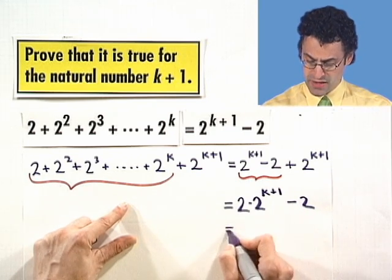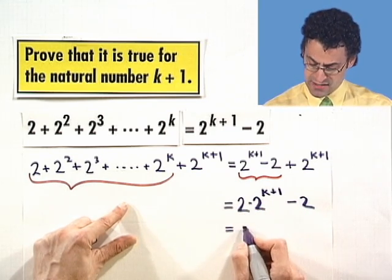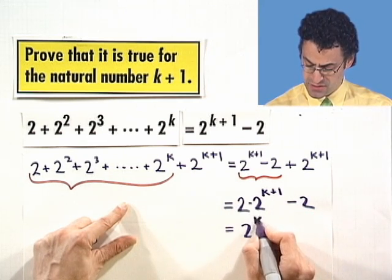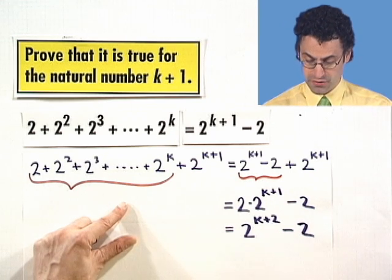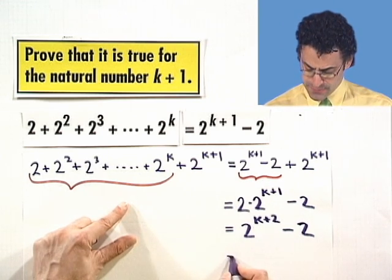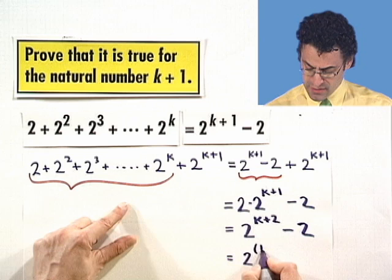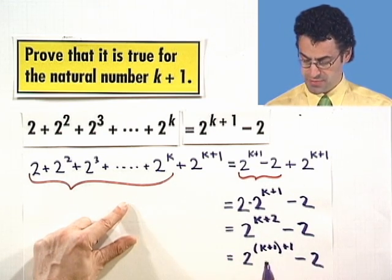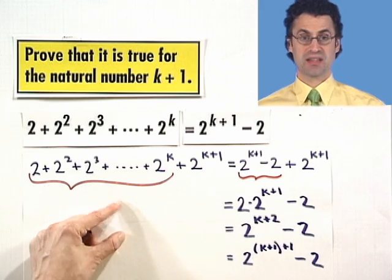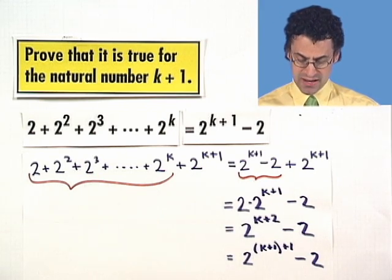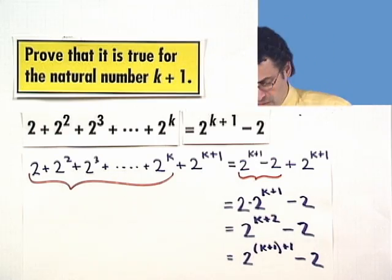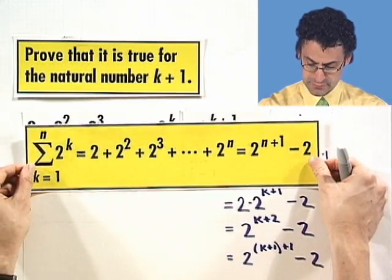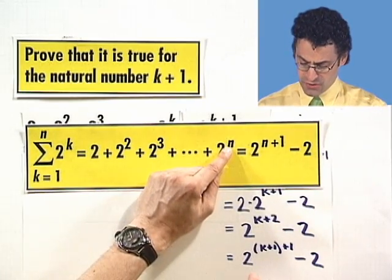And what do we do? Well, the laws of exponents tell me that I add. So I see 2 to the first power plus 2 to the k plus 1 power. That's 2 to the k plus 2 power minus 2, which I can write as 2 to the k plus 1 plus 1 minus 2. Because that's just 1 plus 1 is 2, so I'm writing it in a funny way. But the power is that now I see the statement we're trying to prove holding when n equals k plus 1.